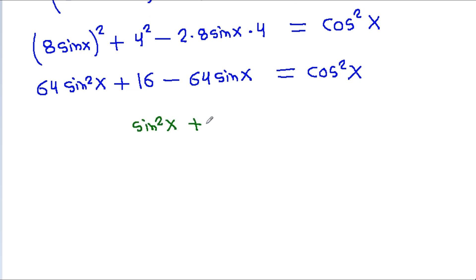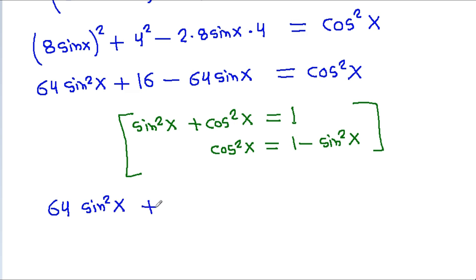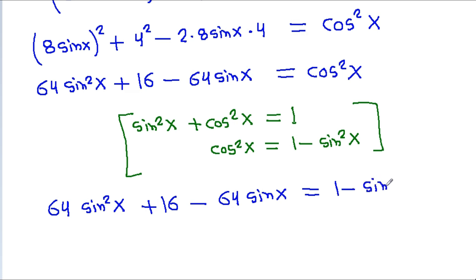We know that cos²x is equal to 1 minus sin²x. So we substitute cos²x with 1 minus sin²x.